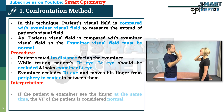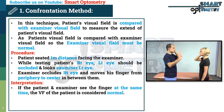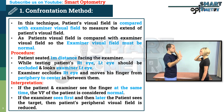Interpretation: If the patient and examiner see the finger at the same time, the visual field of the patient is considered normal. If the examiner sees it first and then later the patient sees the target, then the patient's peripheral visual field is reduced.